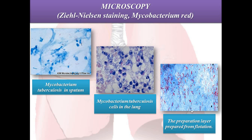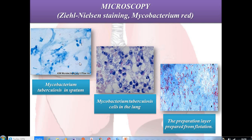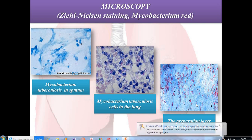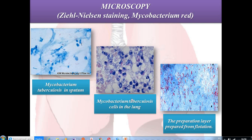By Ziehl-Neelsen staining, Mycobacterium tuberculosis appears red or rose-colored in sputum. Here the preparation was prepared using the flotation method, which is a more effective approach. Then you can see Mycobacterium tuberculosis cells in the lung tissue.